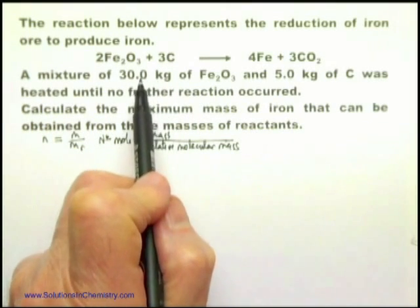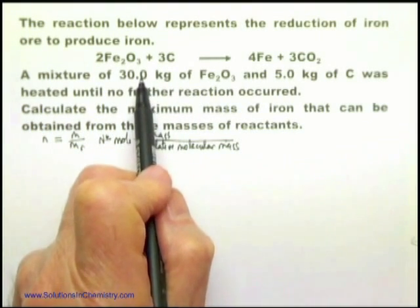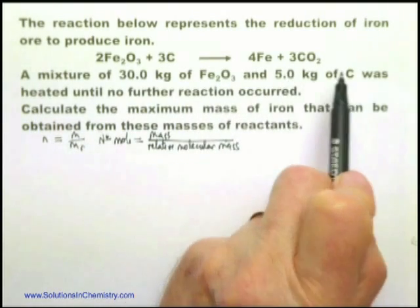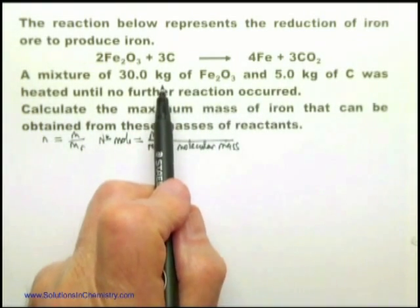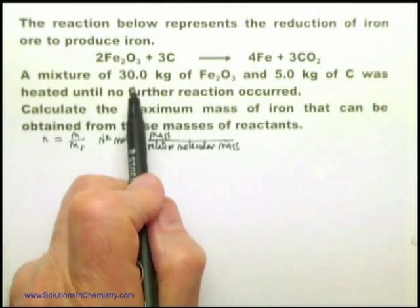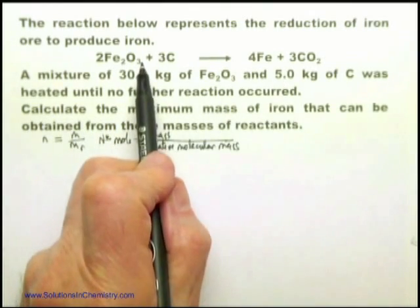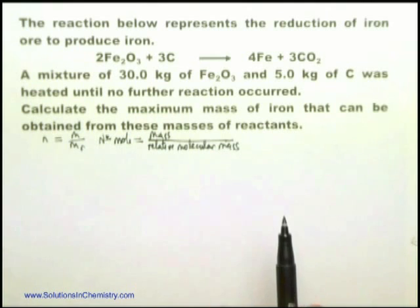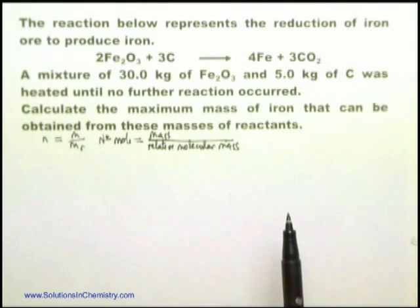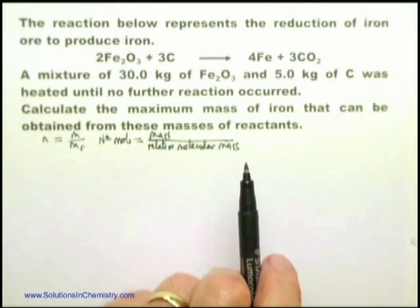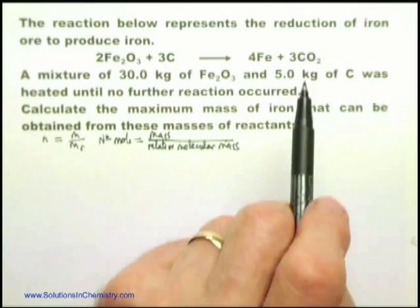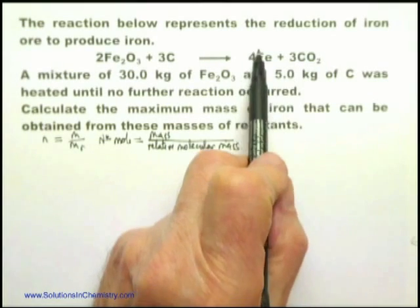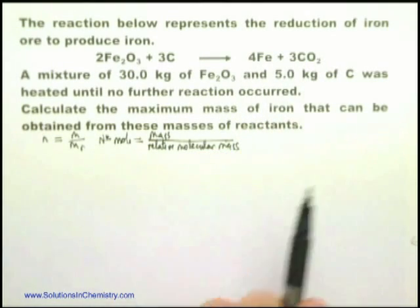The next thing is that there are two starting materials, and in both cases you get their masses: 30 kilograms of Fe2O3 and 5 kilograms of carbon. The question you have to ask yourself is: are they the correct quantities for this equation, or is one of them in excess? Because if one is in excess, then the other one is a limiting reagent, and the limiting reagent will determine the mass of the final products.